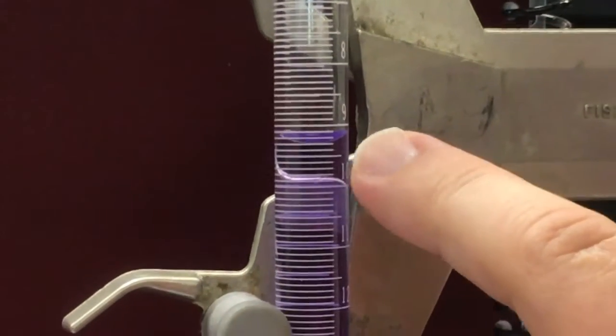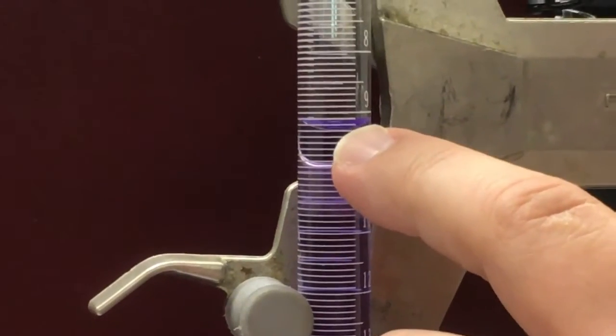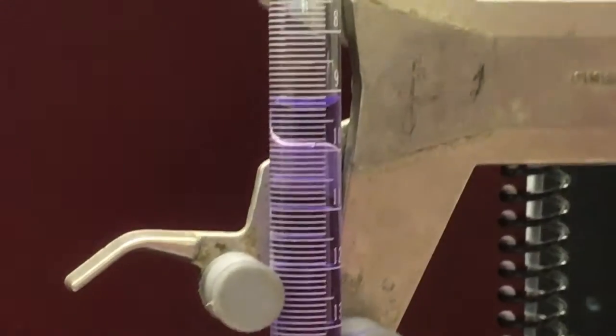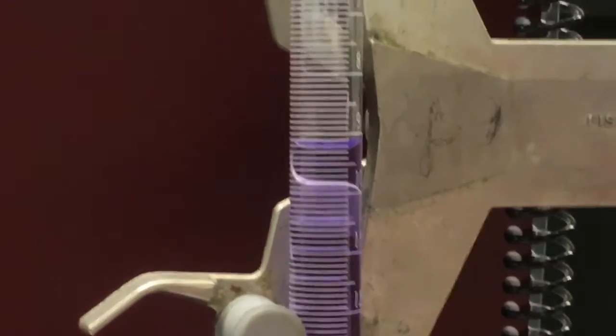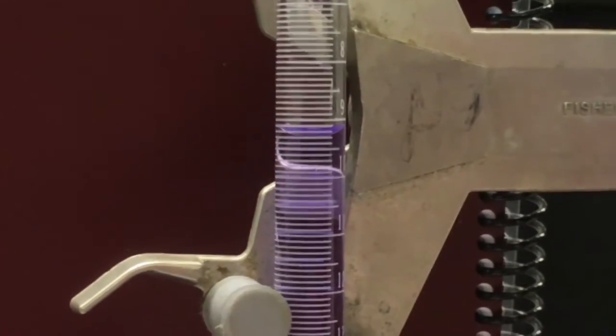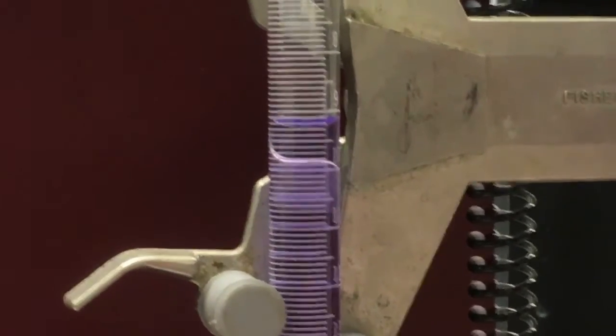The meniscus is definitely past the 9.1 line and past, I think, the 9.2. Looks to me like it's a bit shy of the 9.3 line. So I'm going to call it 9.25 milliliters as the initial level. So I will write that down as 9.25 milliliters.